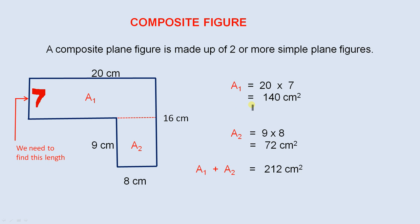So the area of the composite figure is as follows. The area of A1 is 20 times 7, which is 140 square centimeters. Remember the area of a rectangle is the base times the width, or base times height. A2 is just 9 times 8, which is 72 square centimeters. If you add the area of A1 and A2 together, you get the answer, 212 square centimeters.